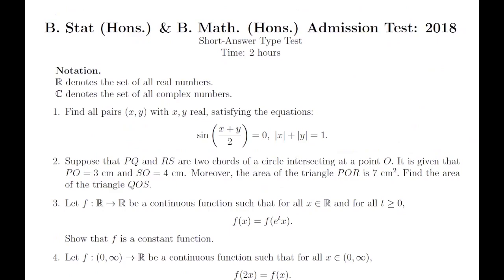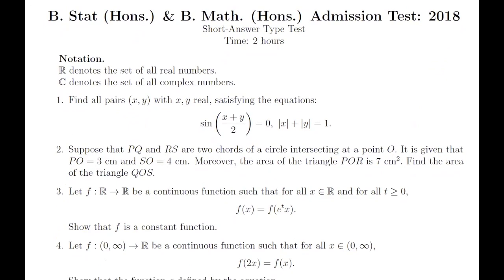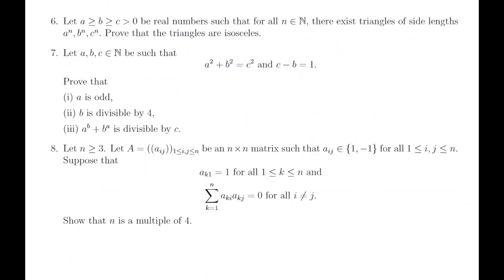Hello everyone, welcome to another video of the 2018 BMath BStat series. In this video we are going to discuss the last problem, that is the eighth problem, which was one of the toughest problems in this paper. It says that if n is greater than or equal to three, you have an n×n matrix A where all entries are either 1 or −1, the first column entries are all 1, and the dot product of any two distinct columns equals zero. With all this given information, we have to prove that n is a multiple of four.